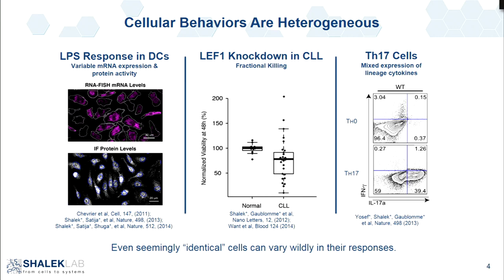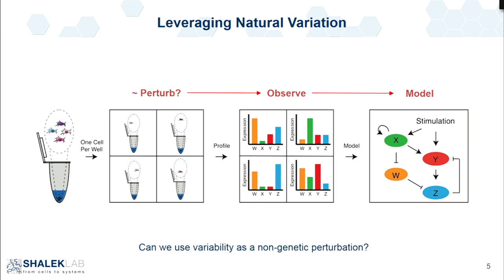In the same way that all of you are in this room and I could assume you are all identical, if instead I got to know each and every one of you and began to profile things about you, I might be able to find patterns — like what agencies you're associated with, some academic, and even some nuances of how you were trained. So about five or six years ago, we did what was an incredibly small pilot experiment where we asked: could we take cells, separate them out, profile their gene expression independently, and through finding patterns identify what might be driving these differences — treating variability almost like a non-genetic perturbation.